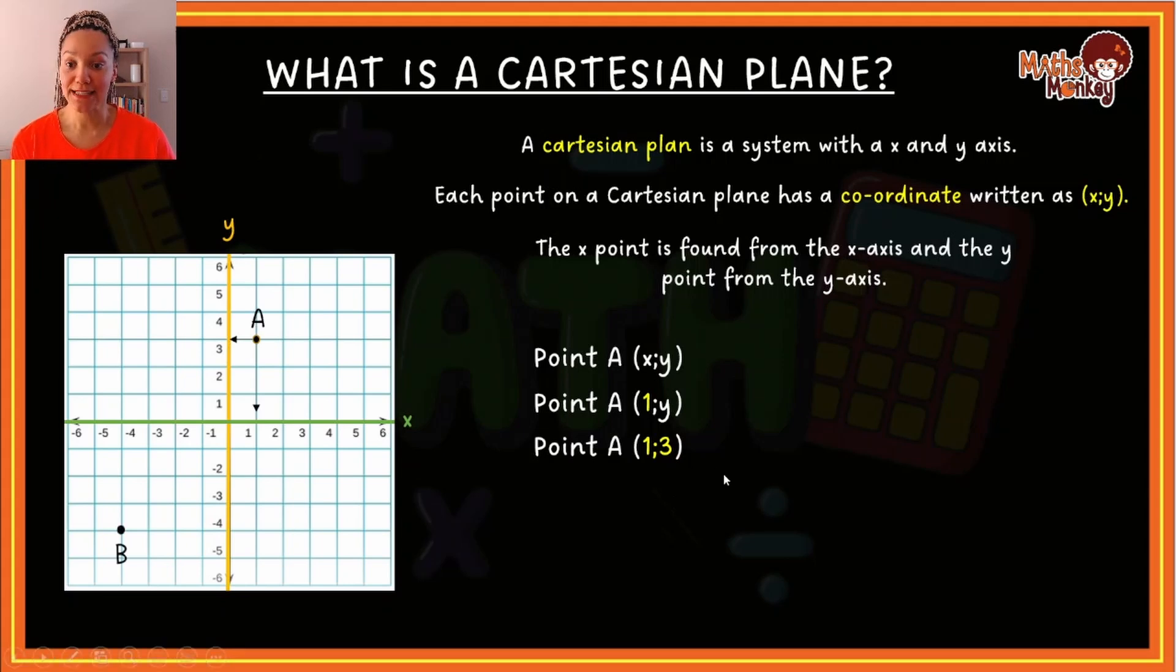Right, so let's try another point. Here we have point B. And again, point B has an (x, y) coordinate. The x-value, I go from the point towards the x-axis, which is -4. And from the point, I go towards the y-axis, right, and that also goes to -4. So that means that the coordinate for B is (-4, -4).